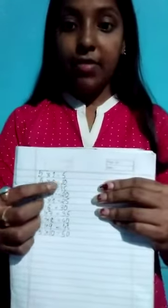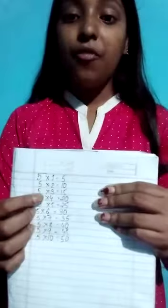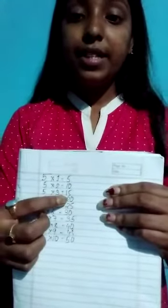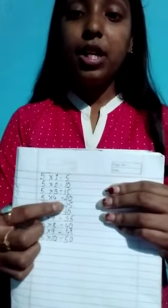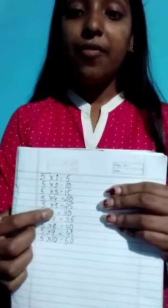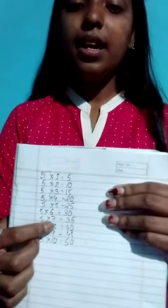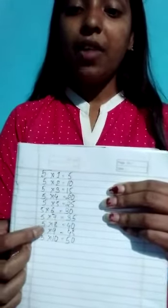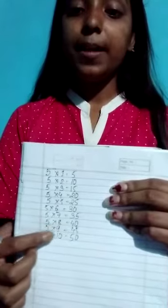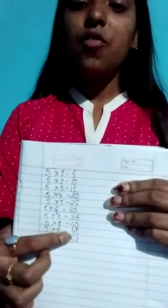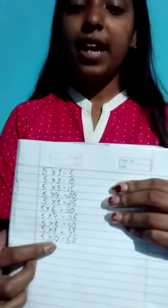Again: 5 ones are 5, 5 twos are 10, 5 threes are 15, 5 fours are 20, 5 fives are 25, 5 sixes are 30, 5 sevens are 35, 5 eights are 40, 5 nines are 45, 5 tens are 50. Okay?